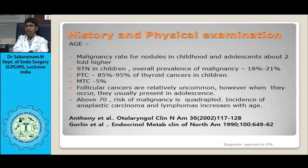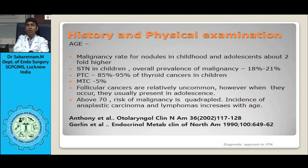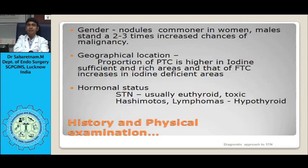The incidence of lymphomas and anaplastic carcinomas increases with age. Regarding gender, a nodule in a female has less chance of malignancy compared to a nodule in a male. In iodine-sufficient areas, the chances of papillary thyroid carcinoma are high, whereas in iodine-deficient areas follicular thyroid carcinoma is more common. Most solitary thyroid nodules are euthyroid, while autonomously functioning thyroid nodules are hyperthyroid, and Hashimoto's thyroiditis and lymphomas are hypothyroid.